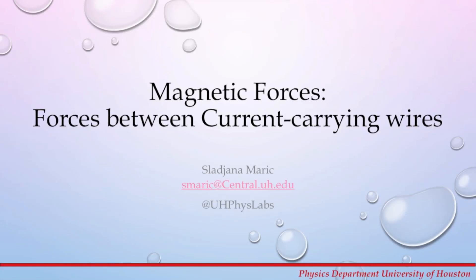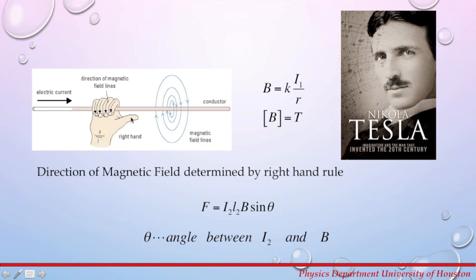This week we will perform an experiment on magnetic forces, on the example of forces between current-carrying wires. Current-carrying wires produce a magnetic field that will produce magnetic forces on other current-carrying wires or on a permanent magnet. A long straight wire that carries a current I1 will produce a magnetic field B, whose magnitude at a distance r from the wire is given by B = kI1/r, where k is a constant that depends on the permeability of the space.